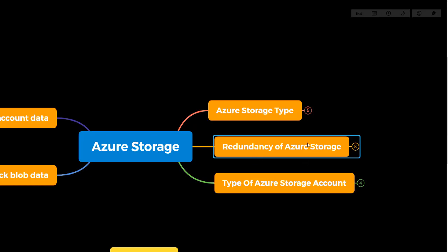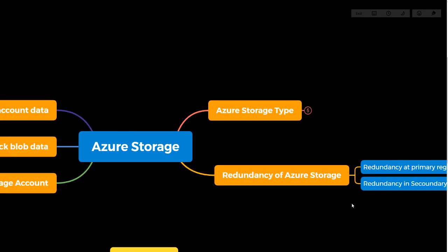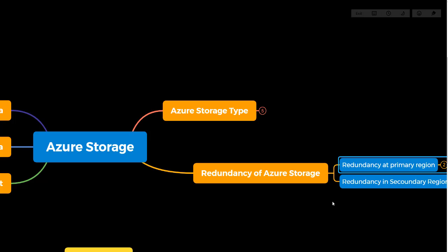After discussing storage types, the next thing is redundancy — how we get more redundancy from Azure while keeping our most important data on the Azure platform. There are two types of redundancy: redundancy at the primary site, such as East US, West US, Europe, or Asia — wherever you are placing your primary region.